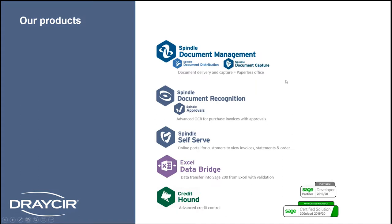Dracer's product stack — what we're focusing on today is the Spindle Document Management suite, which covers document distribution (everything we send out of Sage 200) and Spindle Document Capture (bringing documentation back into Sage 200), together aiming to achieve as much of a paperless office as possible. We also have Spindle Document Recognition for processing purchase invoices using OCR software that scrapes data and automatically posts and archives it into Sage 200, matching against any purchase order or transaction.